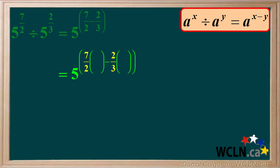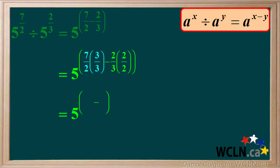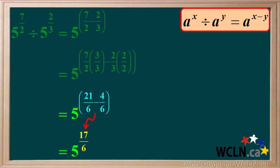To get the same denominator, we multiply 7 over 2 by 3 over 3 and 2 over 3 by 2 over 2. This gives us the common denominator of 6. So we get 5 to the power of 21 over 6 minus 4 over 6, which gives us 5 to the power of 17 over 6.